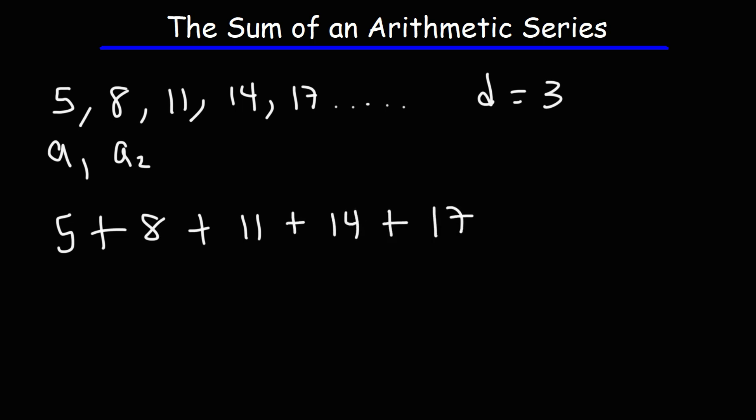So let's say we want to calculate the sum of the first six terms. This would be S sub 6. So it's going to be 5 plus 8 plus 11 plus 14 plus 17. So that gives us a sum of 55.